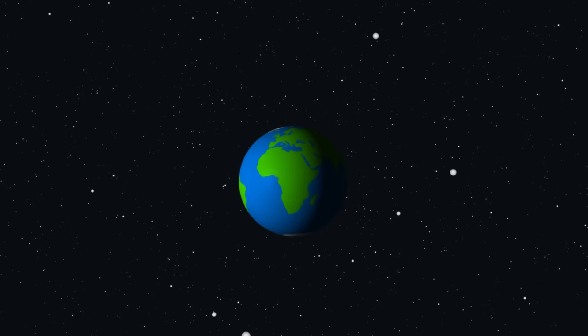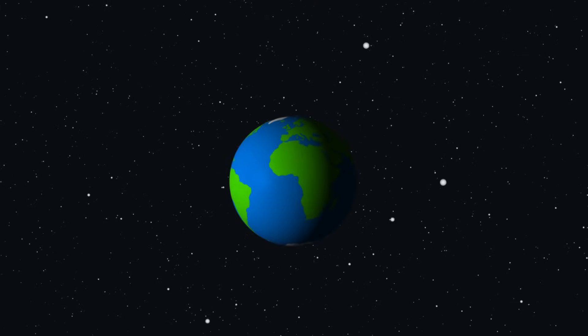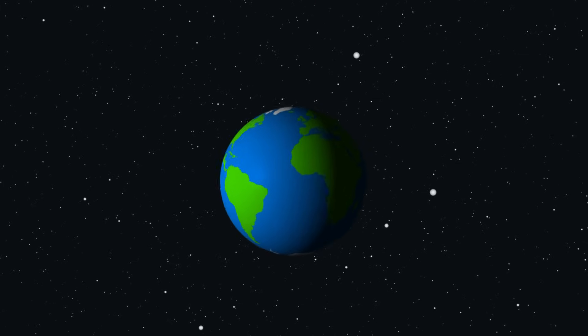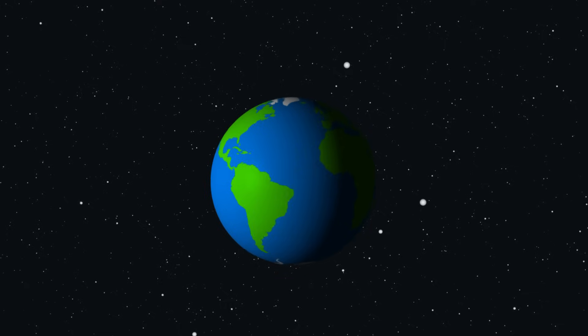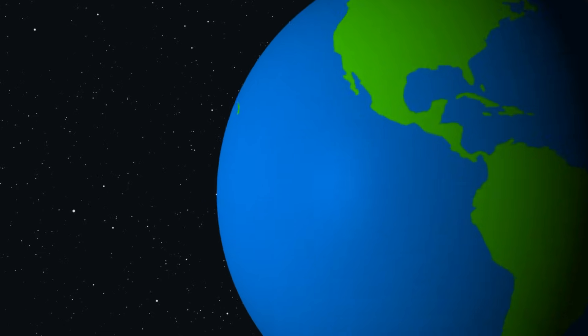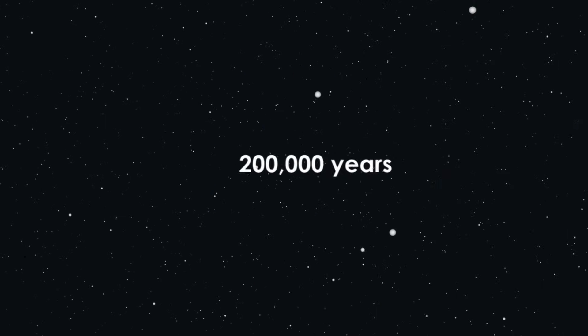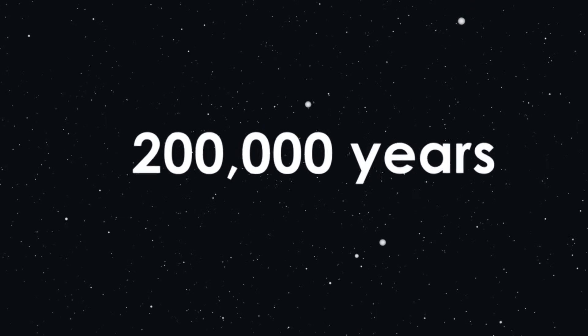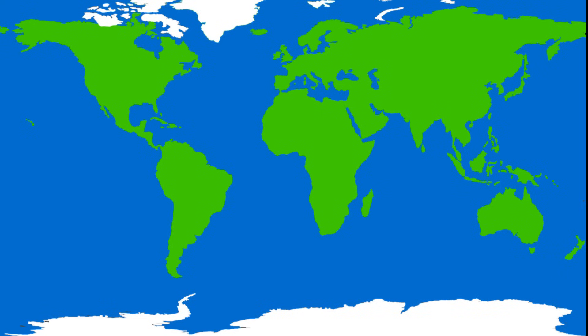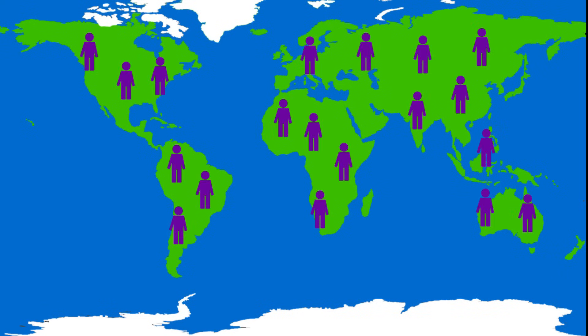It is estimated that the Earth is over 4.5 billion years old, and that modern humans have been walking the face of it for around 200,000 years. The geography of our planet has shaped the population patterns, available resources, industries, cultures, and nearly every facet of human activity during those 200,000 years.